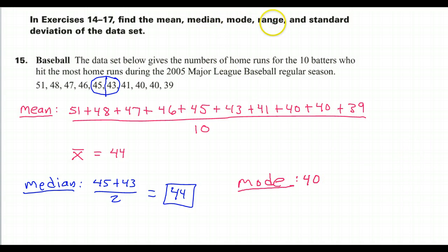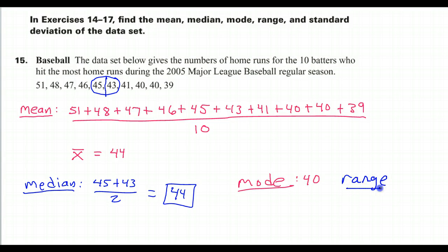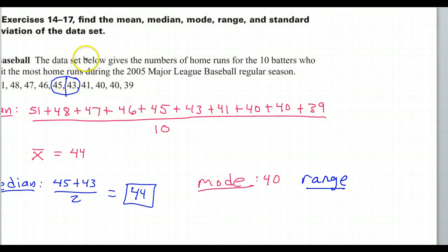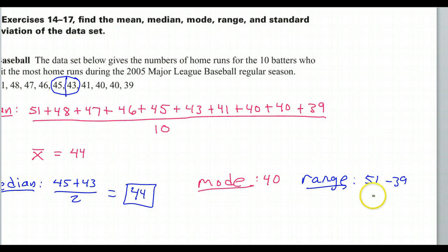We're also supposed to find the range. The range is the highest value minus the lowest value. So the range is going to be 51 minus 39, which means the range is 12.